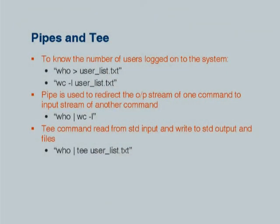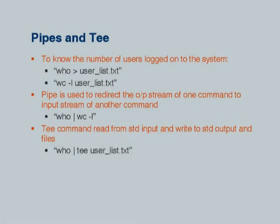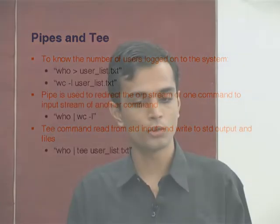Now we will come to pipes. Sometimes there is a need to redirect the output of one command to another command. For example, you want to count the number of users presently logged in to the system. The 'who' command will list out all the users, and if you count the number of lines in 'who' you will get the number of users logged in. You could redirect the output to a file called userlist.txt and then count the number of lines using wc -l. Instead of doing that, you can use a pipe command, which is a redirection mechanism that redirects the output of 'who' to wc -l directly — so you do not need to create a separate file.